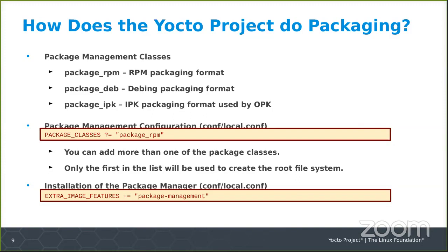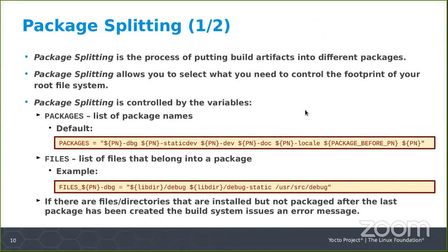Using a package management class does not mean the package manager itself (e.g., the rpm command or apt command) will be installed in your root file system. If you want the package manager in your root file system, you add the 'package-management' image feature to the EXTRA_IMAGE_FEATURES or IMAGE_FEATURES variable. If you package all artifacts in one big package, you don't get the benefits of managing space on your target system, so you want to split up your artifacts into different packages — that process is called package splitting.